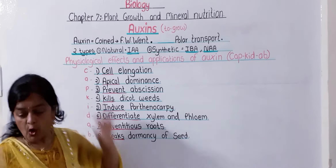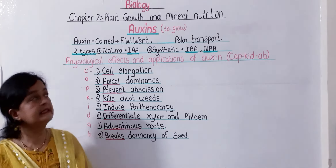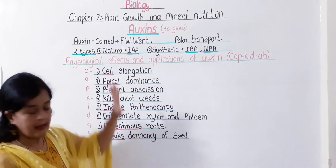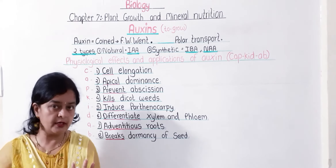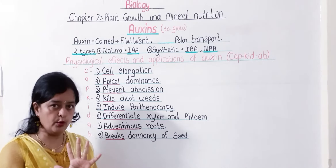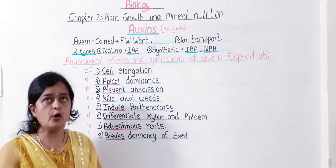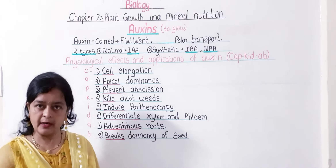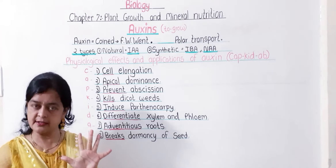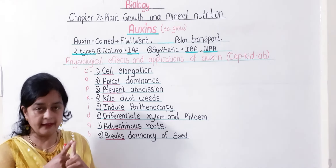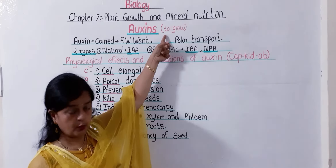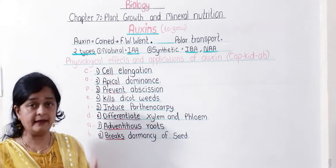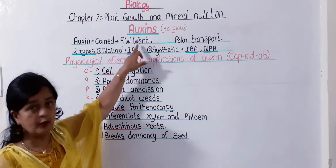This term auxin was coined by the scientist F.W. Went. We are going to study five hormones today, and all five hormones were discovered or introduced accidentally. The first one is auxin, which means to grow, and this term was coined or isolated by the scientist F.W. Went.